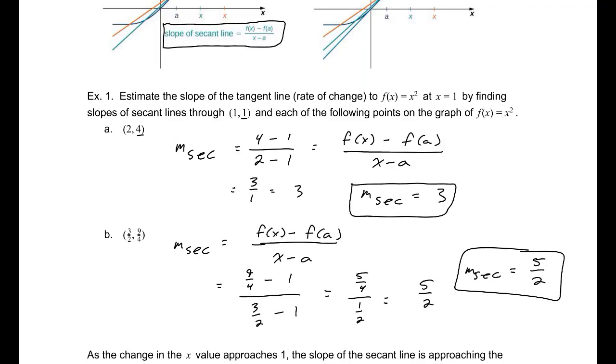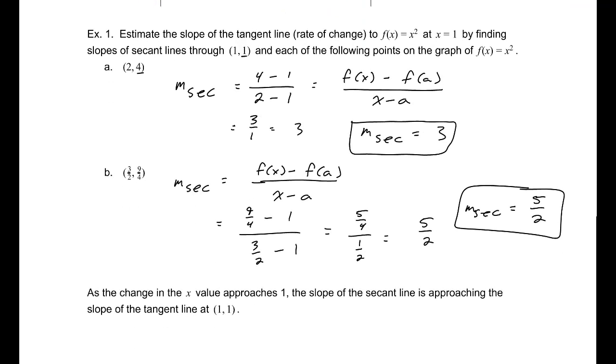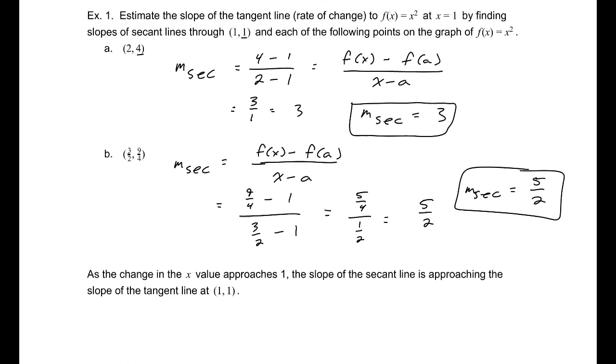If we repeated this process and allowed the change in x, or the x values to approach 1, if we allow the change between our x and a to go to 0 as they get closer and closer together, that will approach the slope of the secant line at that point.